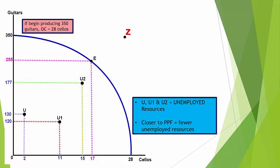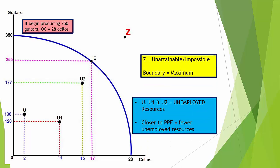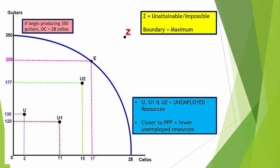Let's say we wanted to move to point Z — is this realistic for this economy? No. The PPF line represents the maximum possible, so anything beyond that line, like Z, is unattainable or impossible because there are only a certain number of resources and only a certain maximum we can produce with them. Growth — covered in the next video — would involve shifting the PPF curve outward so that Z could become possible, but as things currently stand, Z is not attainable.